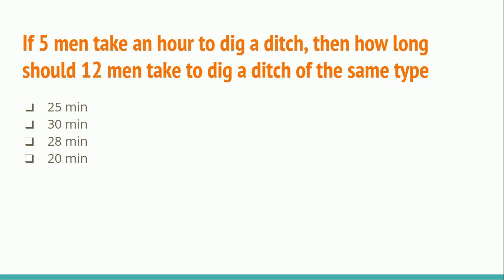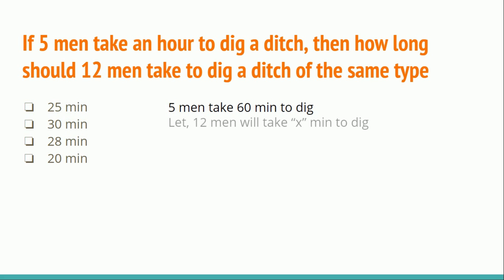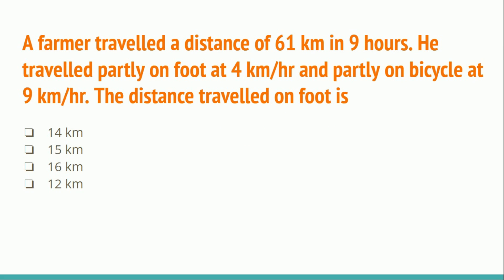Those who have solved this problem can comment the answer in the comment section. For those who haven't, here is the solution. Five men take 60 minutes to dig a ditch, as mentioned in the question. Let 12 men take X minutes to dig the same type of ditch. Since the ditch is the same type, 5 × 60 = 12 × X, so X = 25. The answer is 25 minutes.